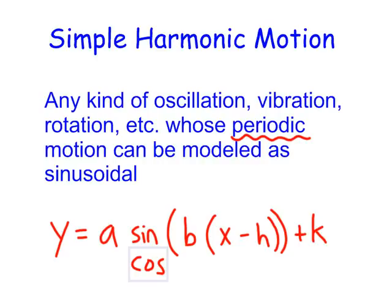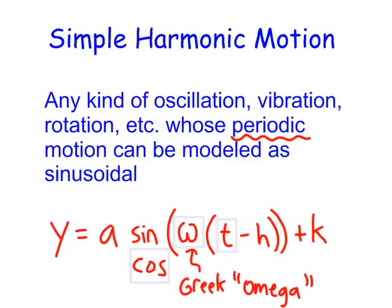Here's a strange concept for you. Instead of x being our independent variable, time t is always going to be our independent variable. We're essentially taking the sine or cosine of time. The book likes to replace B with the Greek letter omega. I don't really care what you use in your calculations. If you want to stick with B, that's fine. If you use omega, that's fine too.